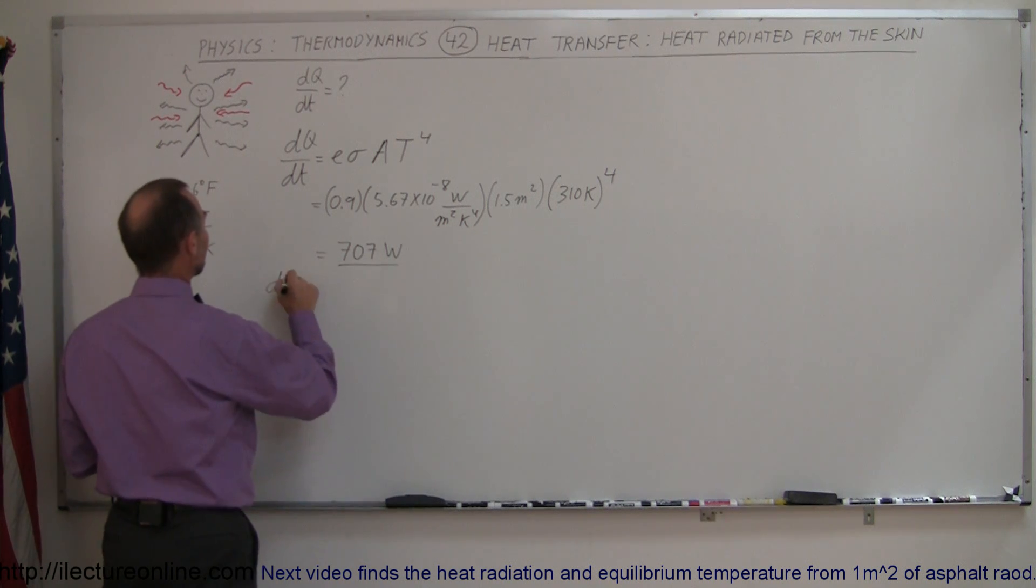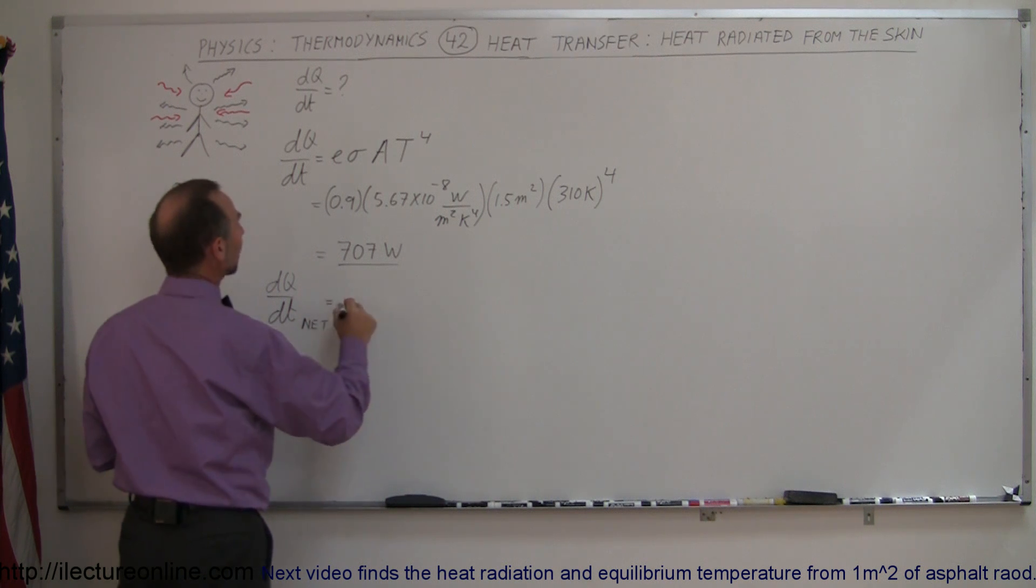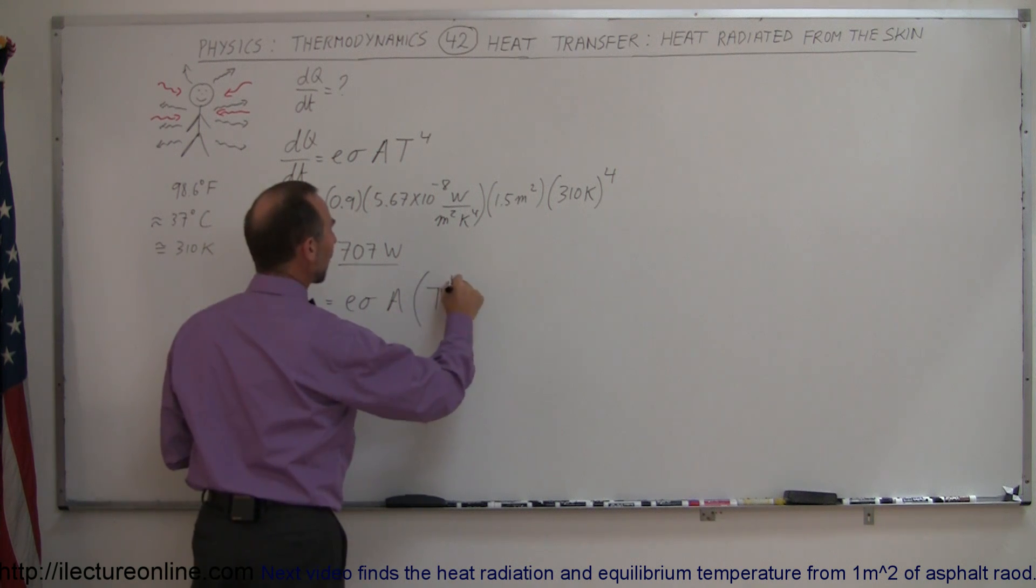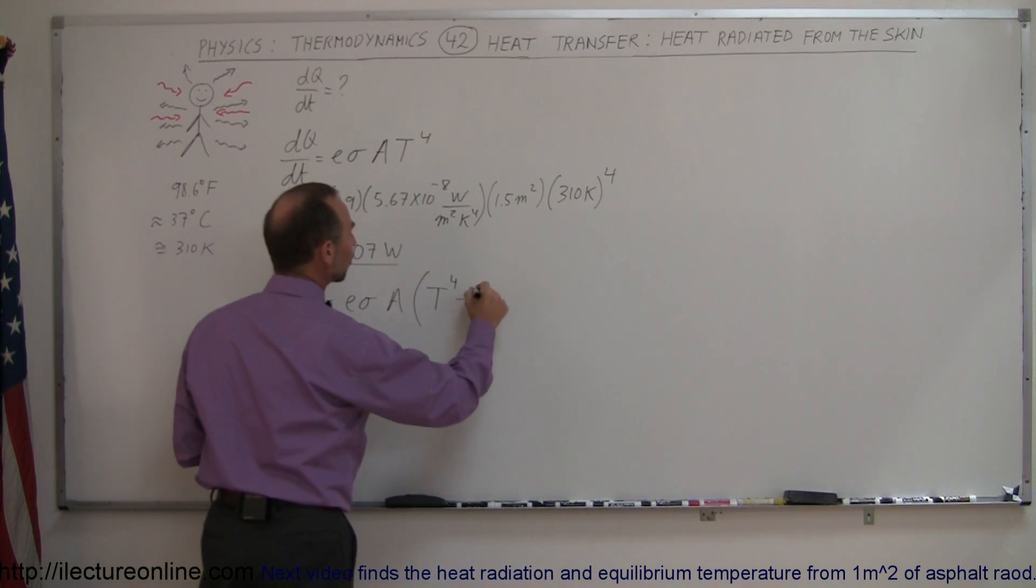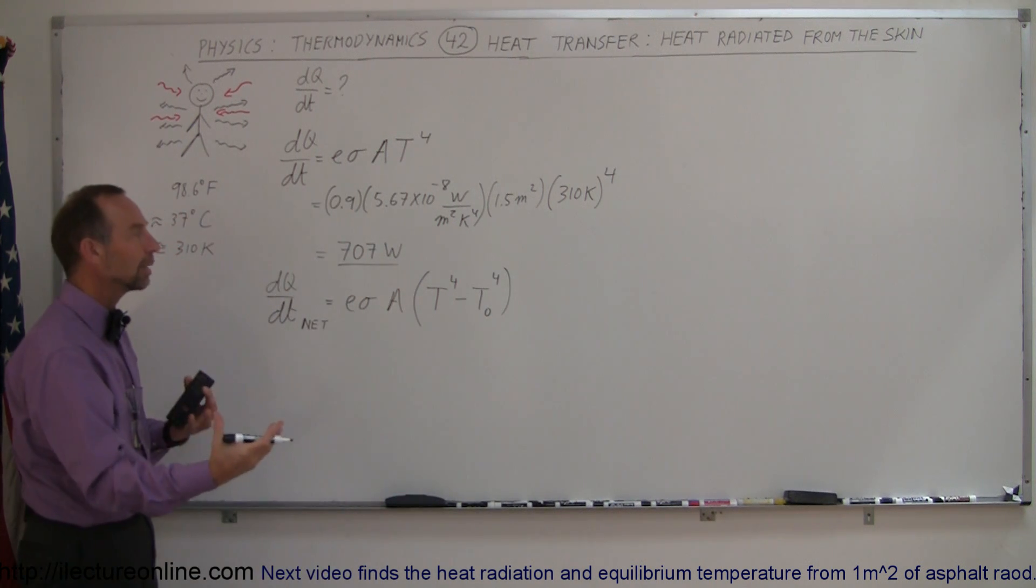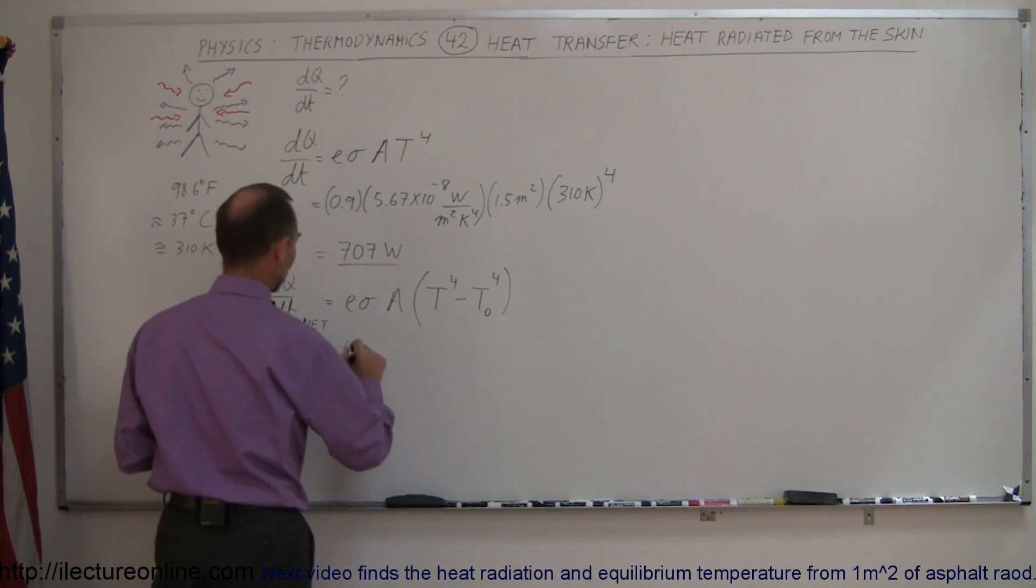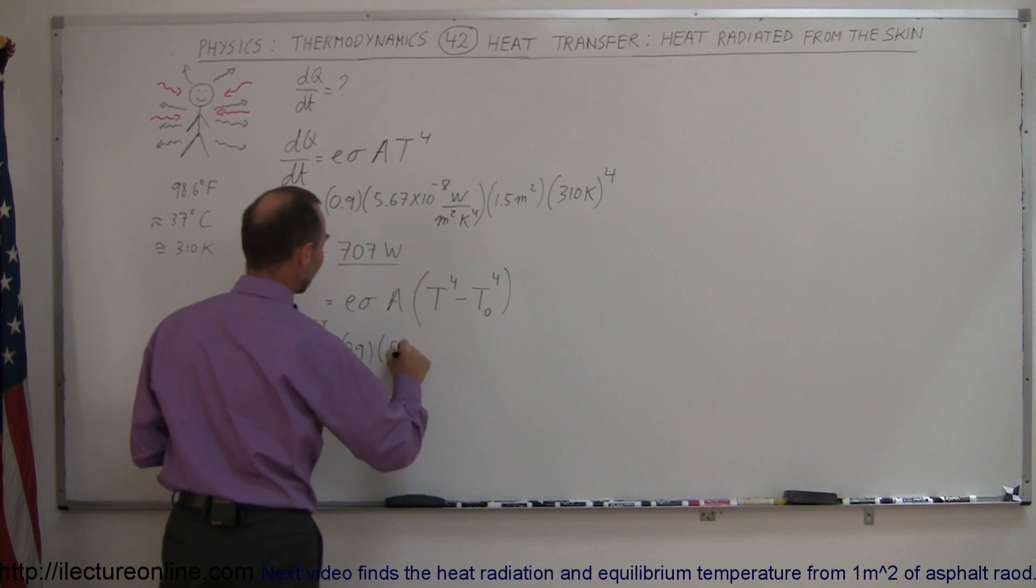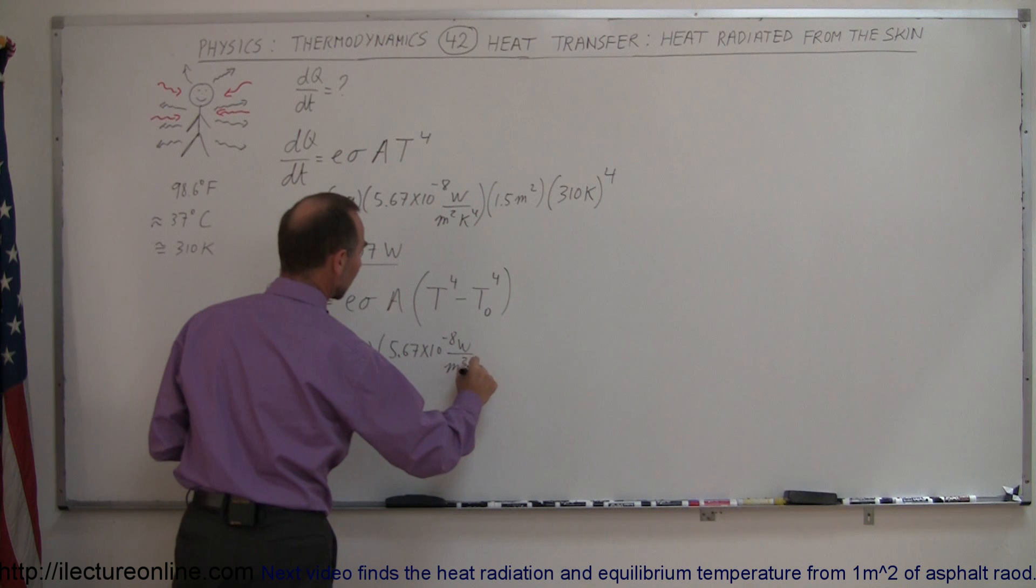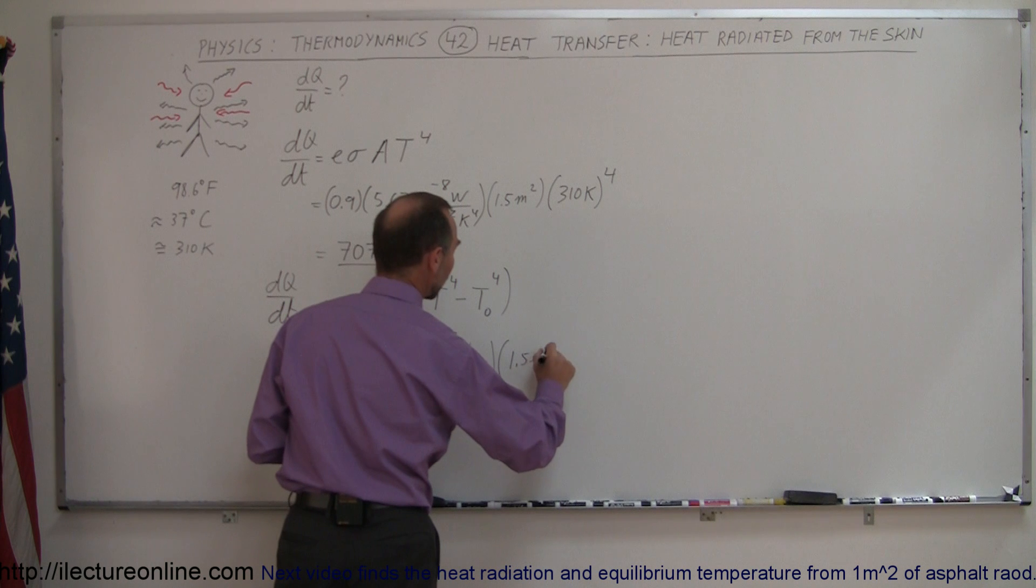Really what we need to calculate is dQ/dt net, which can be written as E sigma A, that's all the same, but the temperature will be the temperature of the body to the 4th power minus the temperature of the environment to the 4th power, because that's the heat that the body will then be receiving. So that's the adjustment to the calculation. This now would become 0.9 times 5.67 times 10 to the minus 8 watts per square meter, Kelvin to the 4th power, times still the area of 1.5 meters squared.